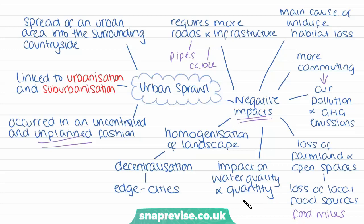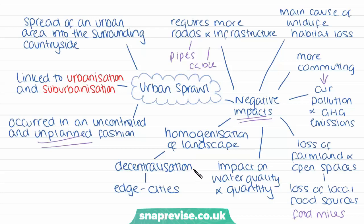Urban sprawl is also having severe impacts on water quality and quantity, because covering the countryside with impermeable surfaces such as roads means that rainwater is unable to soak into the ground and replenish groundwater aquifers. It's also going to lead to increased water pollution as cities tend to be much dirtier than rural landscapes. In addition to this, the movement of people into suburbs has been accompanied by the movement of industry, business, retail and companies — referred to as decentralisation.